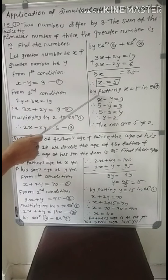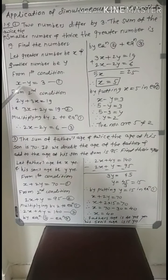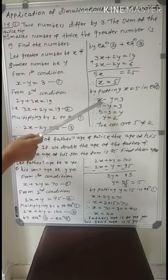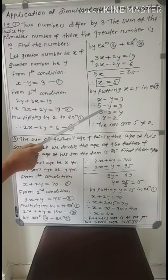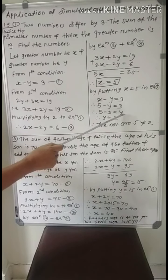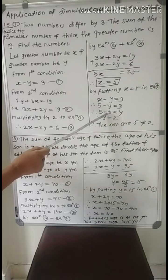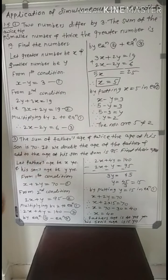Now by putting x equal to 5 in equation 1, because equation 1 is very simple: x minus y equal to 3, replace x by 5. 5 minus y equal to 3. By rearranging, 5 minus 3 equals 2, so y equals 2.